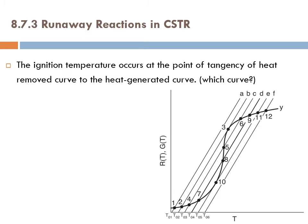The ignition temperature occurs at the point of tangency of the heat-removed curve to the heat-generated curve. For example, looking at curve E, this is the RT line, and there is the GT curve. The tangency point for this straight line E is indicated here.